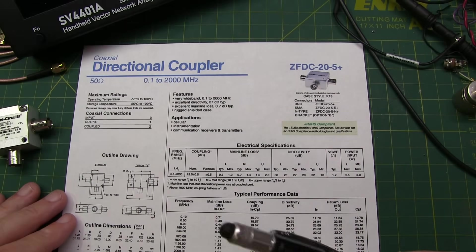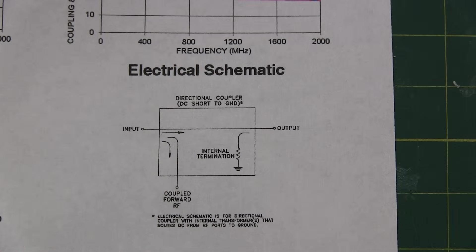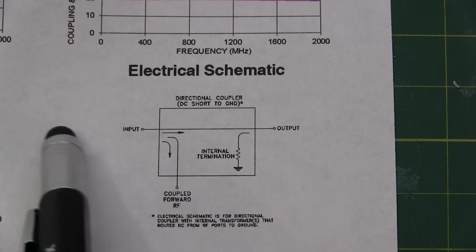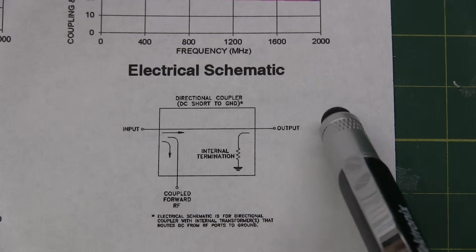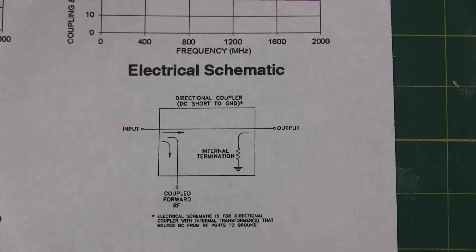So that sets the frequency range that we're going to make the measurements over. Now just as a review, a directional coupler is a three-port RF device that can give you a sample of the signal going through in one direction, and ideally nothing for a signal going in the opposite direction, hence the name directional coupler.